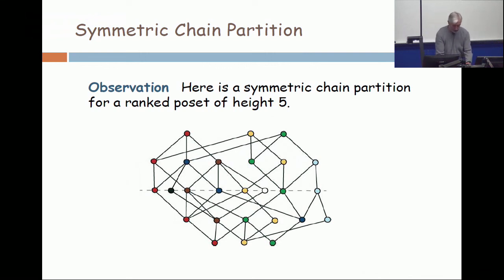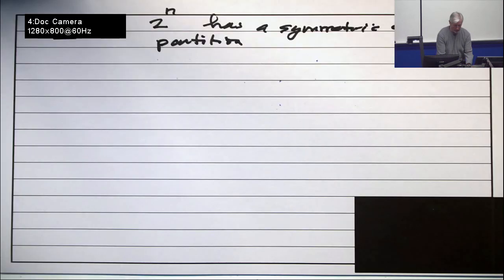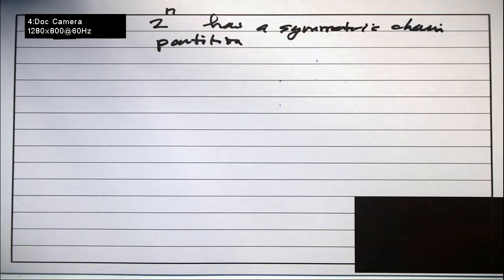Now, let's go back to the challenge of the moment of showing that 2 to the n has a symmetric chain partition.